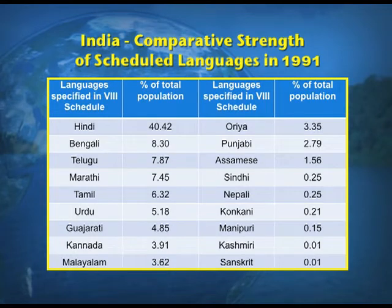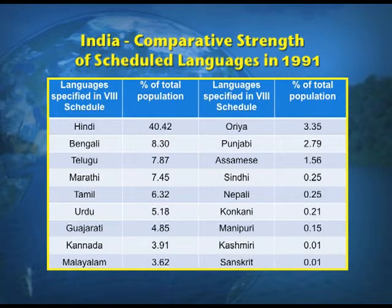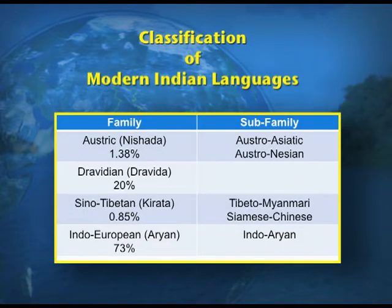The 18 scheduled languages are: Hindi, Bengali, Telugu, Marathi, Tamil, Urdu, Gujarati, Kannada, Malayalam, Oriya, Punjabi, Assamese, Sindhi, Nepali, Konkani, Manipuri, Kashmiri, and Sanskrit. According to these languages, there are four language families: the Austric family constituting 1.38 percent, the Dravidian family at 20 percent, the Sino-Tibetan family at 0.85 percent, and the largest is the Indo-European or Aryan linguistic family constituting 73 percent of the total population.